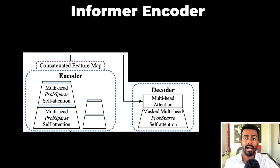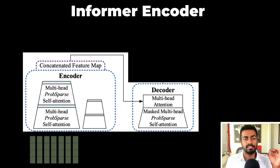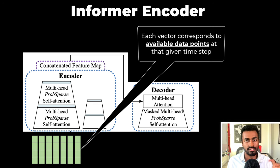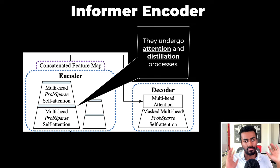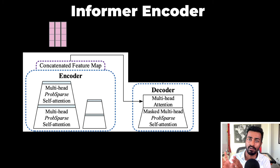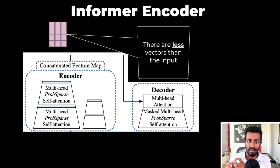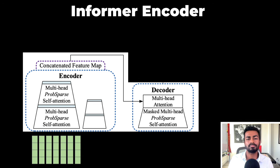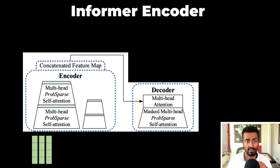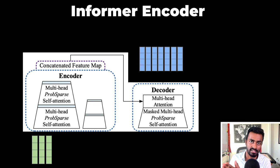For this first pass, let's illustrate the high-level working of the informer, and then we can dive deeper into the encoder. This is the informer architecture. To the input, we pass in some time series vectors, and each vector corresponds to available data points at that given time step. This information is passed into the encoder, where they undergo some attention and distillation processes. We get some output encoder vectors — fewer than the input — which are transformed versions of the inputs. These are then passed into the decoder, along with some subset of the input as context. The decoder then generates the next chunk of predicted timestamps.